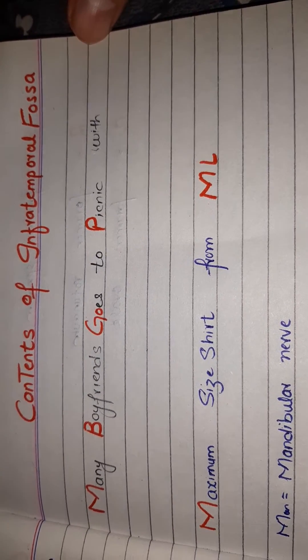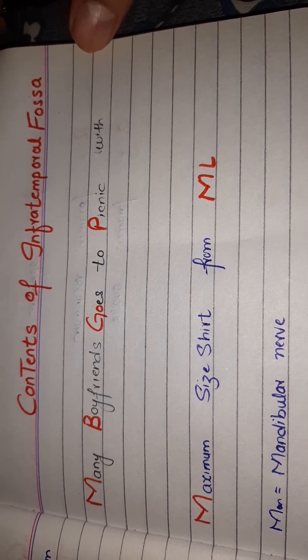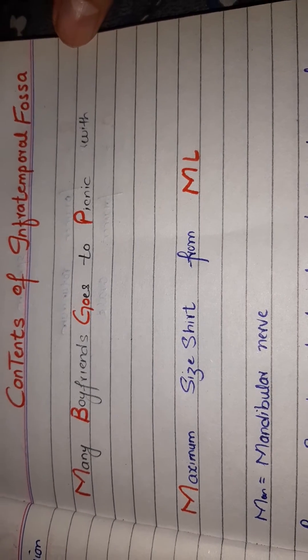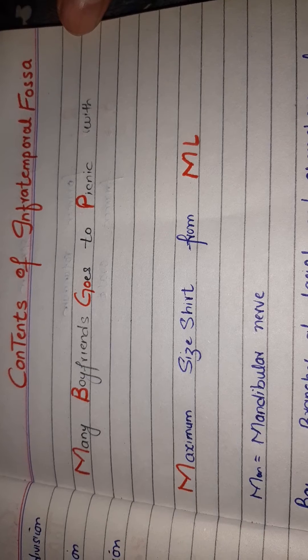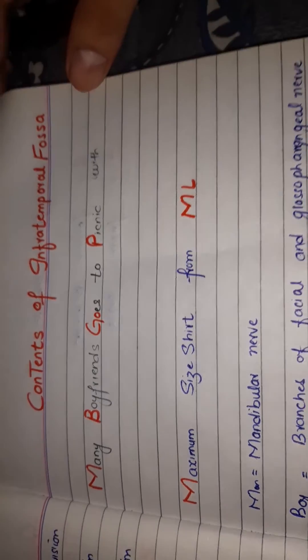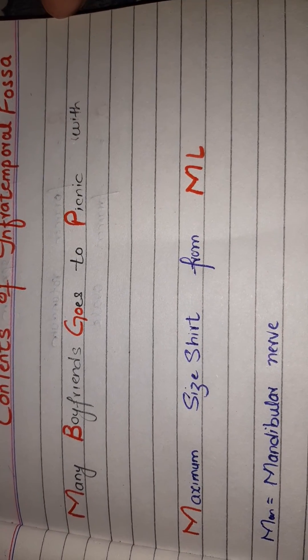'P' in 'picnic' stands for the pterygoid venous plexus. 'Max' in 'maximum' stands for the maxillary artery. 'Size shirt' stands for the sphenomandibular ligament. And 'ML' means the medial and lateral pterygoid muscles. So the mnemonic for the contents of the infratemporal fossa is: 'Many boyfriends goes to picnic with maximum size shirt from ML.'